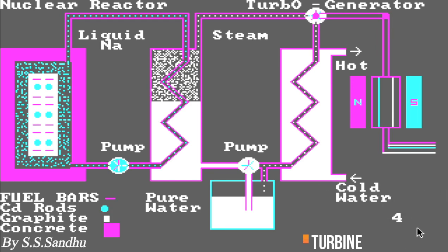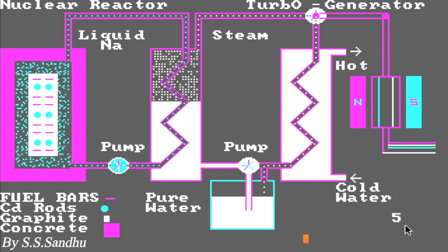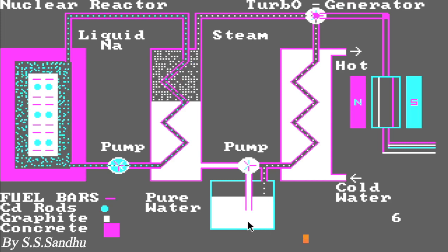Nuclear power plants use the heat produced during nuclear fission to convert water into steam. In nuclear fission, atoms are split apart to form smaller atoms, releasing a huge amount of energy. Fission takes place inside the reactor of a nuclear power plant. The interior of the reactor is called the core, which contains uranium fuel.